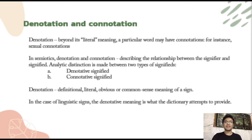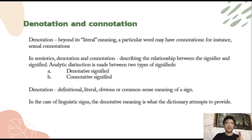Let's talk about denotation and connotation. Beyond its literal meaning is denotation. A particular word may have connotations — for instance, sexual connotations. In semiotics, denotation and connotation are terms describing the relationship between the signifier and signified. An analytical distinction is made between two types of signifieds: the denotative signified and the connotative signified. Denotation tends to be described as the definitional, literal, obvious, or common sense meaning of a sign. In the case of linguistic signs, the denotative meaning is what the dictionary attempts to provide.